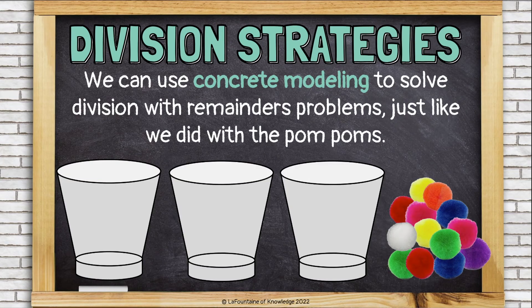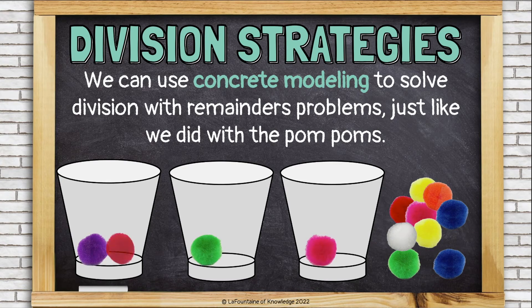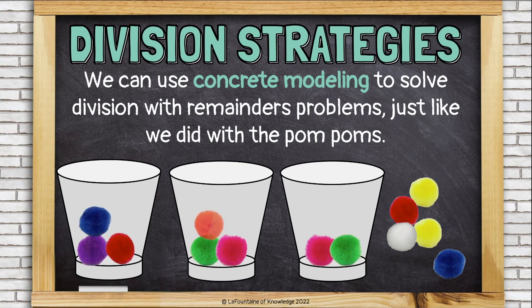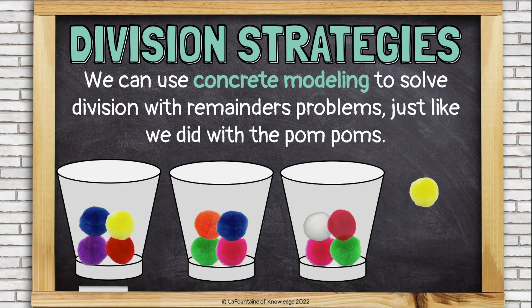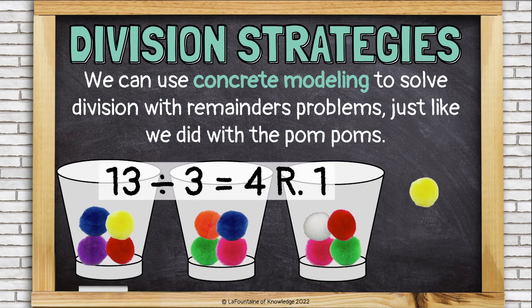We can use concrete modeling to solve division with remainders, just like we did when we didn't have a remainder. We can use the pom-poms. 13 divided by 3 equals 4 remainder 1.